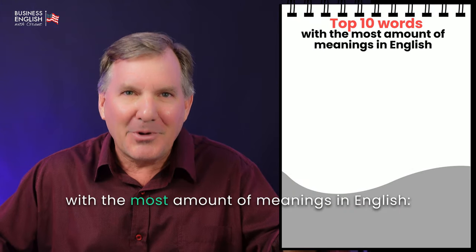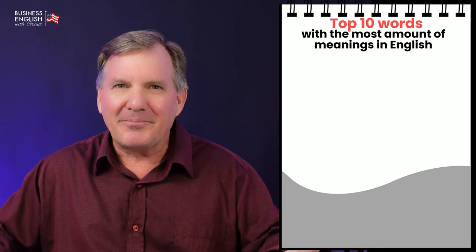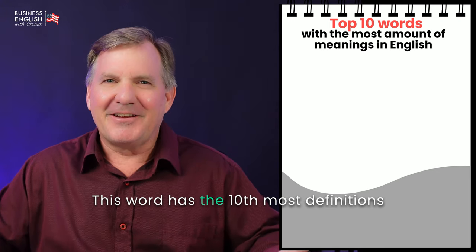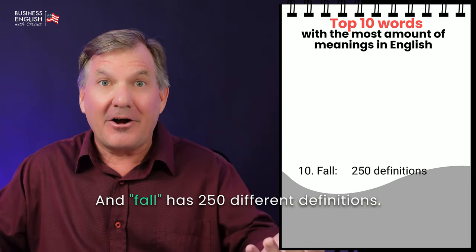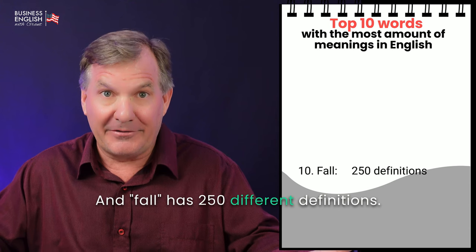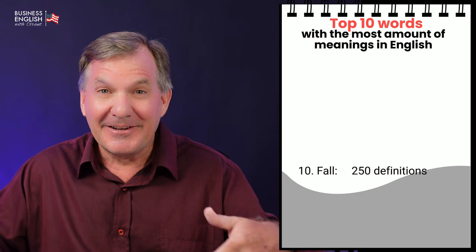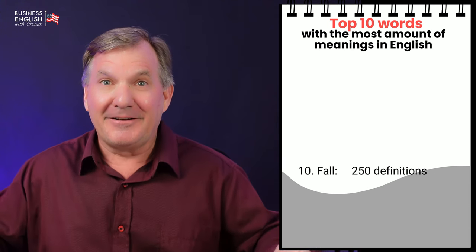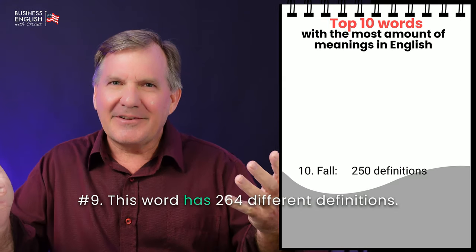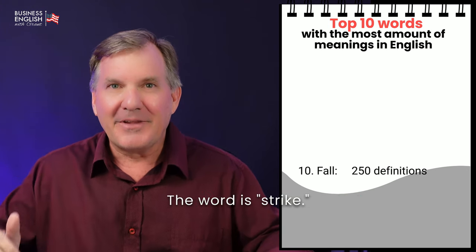Let's take a look at the top 10 words with the most amount of meanings in English. Let's start at number 10 and work our way up to number one. At number 10, the word is 'fall,' and fall has 250 different definitions. At number nine, the word 'strike' has 264 different definitions.